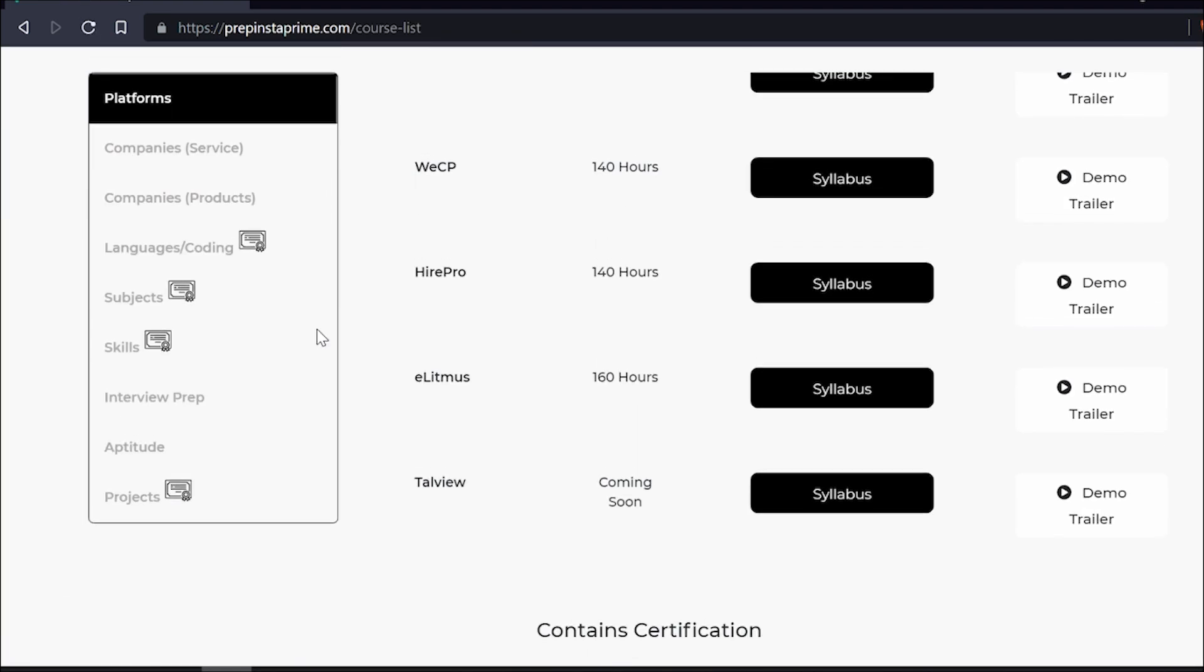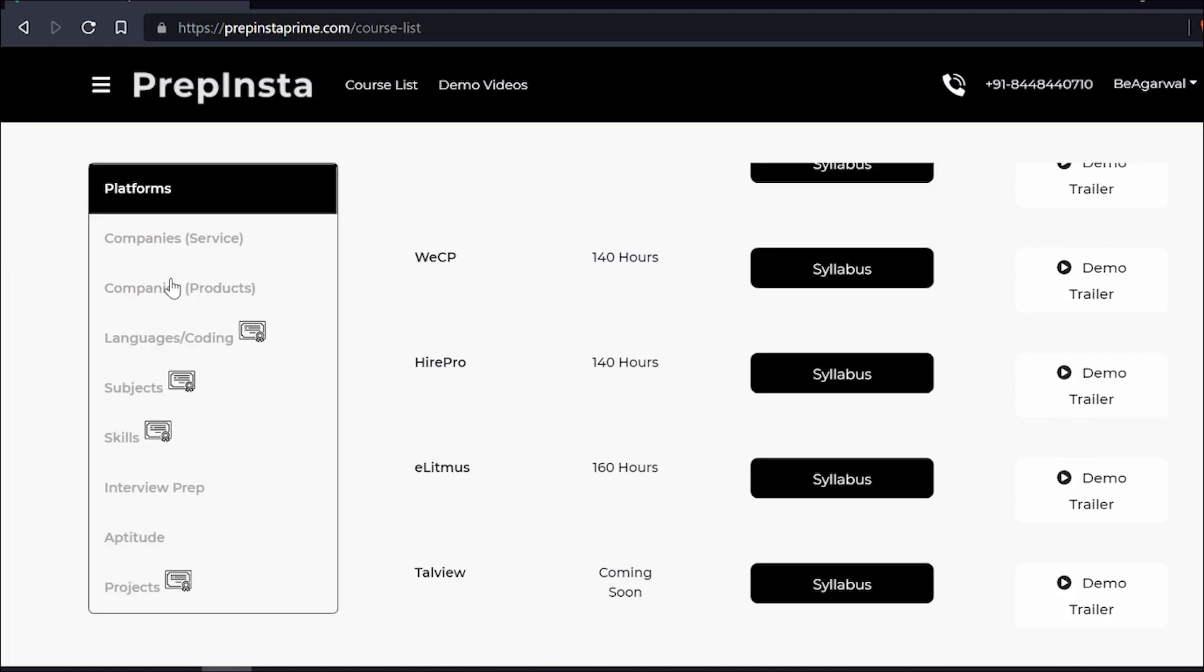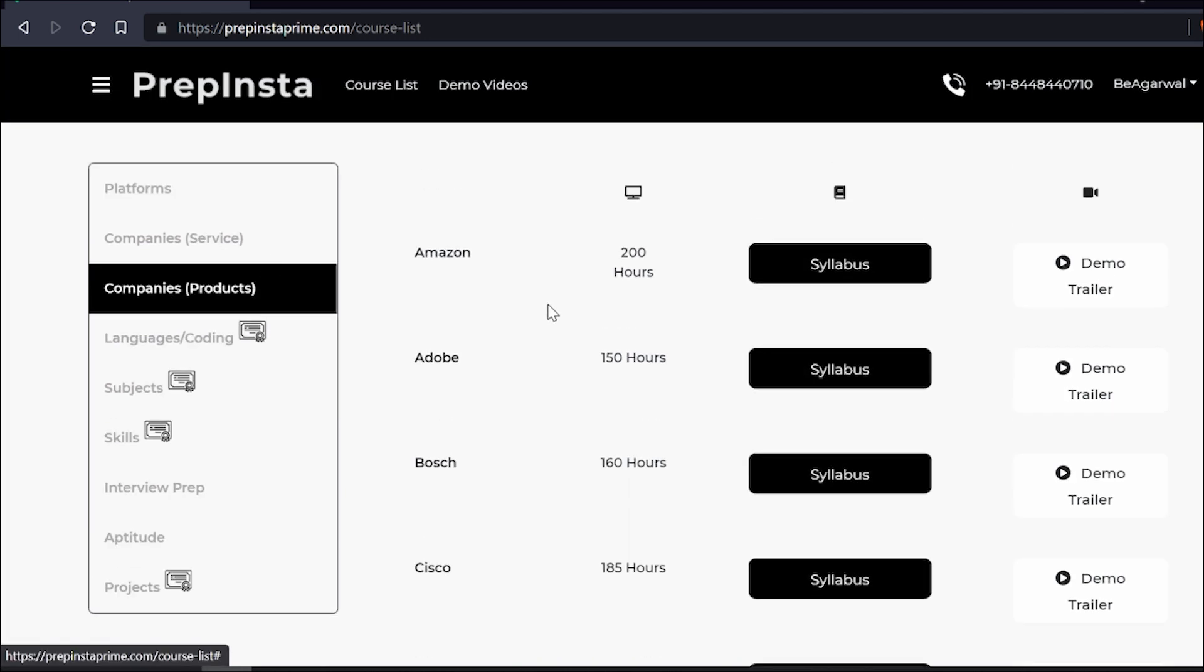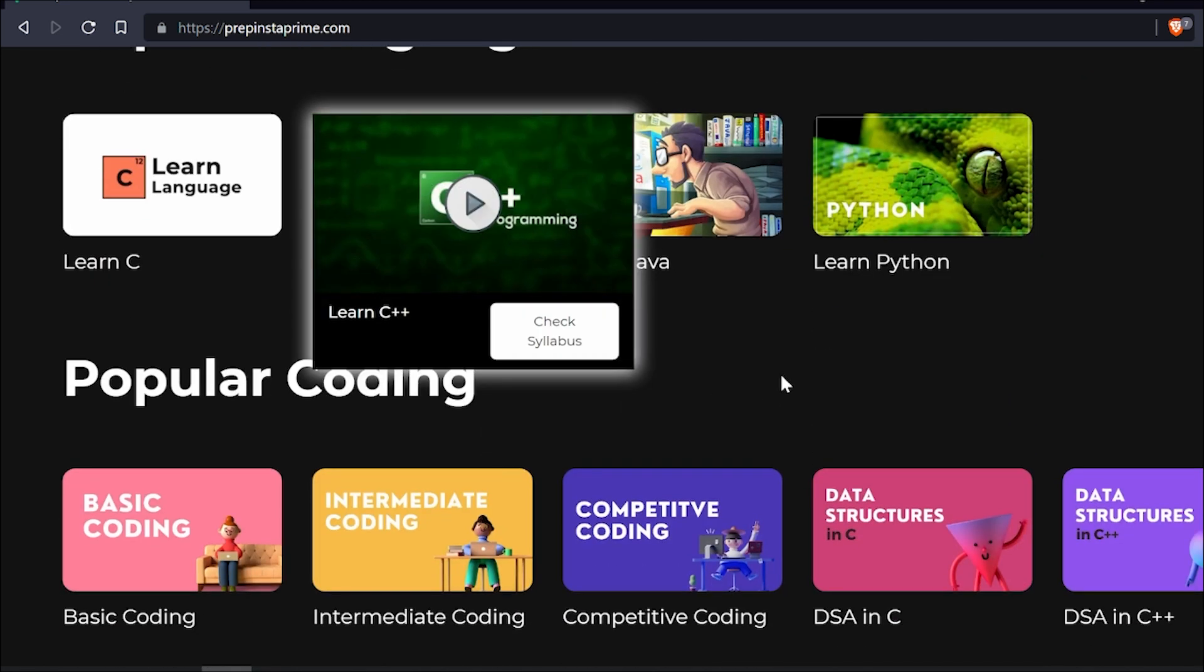Once you hit this, you can check out the course list. You will get more than 100 courses over there. If you are focusing on service-based companies like Infosys, TCS, Deloitte, or product-based companies like Amazon, Adobe, FAANG type companies, or even if you are focusing on AI ML or blockchain, we have all the courses. The best thing here is you have to pay only once for the whole platform, like you usually pay for Netflix or Amazon Prime. You will get access to PrepInsta Prime and PrepInsta.com as well.